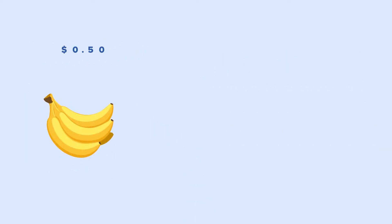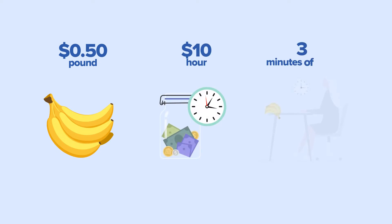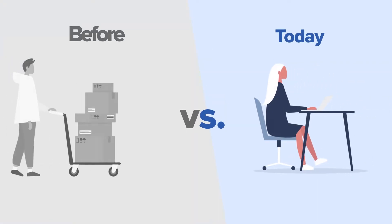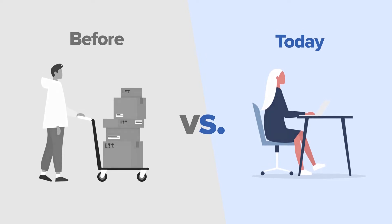Consider bananas. If bananas cost 50 cents a pound and you earn $10 an hour, a pound of bananas will cost you three minutes of work. To see if you are better off today than in the past, let's compare the time prices over time.